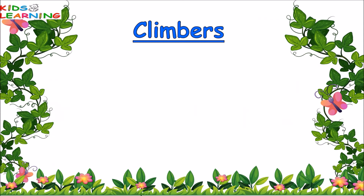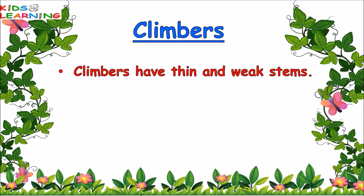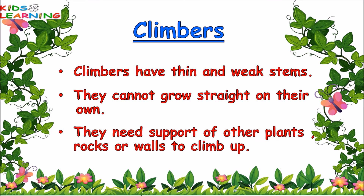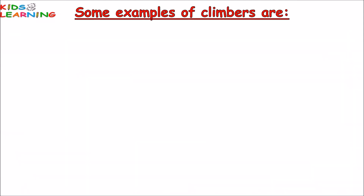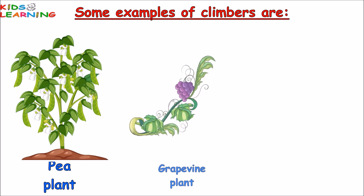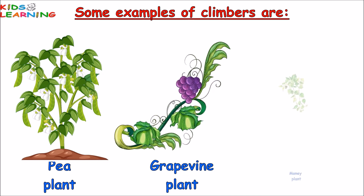Climbers. Climbers have thin and weak stems. They cannot grow straight on their own. They need the support of other plants, rocks or walls to climb up. Some examples of climbers are the Pea plant, Grapevine plant, and Money plant.